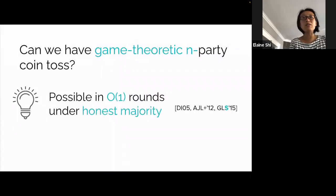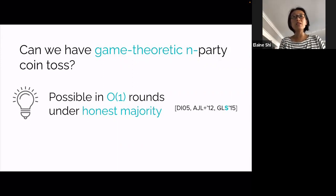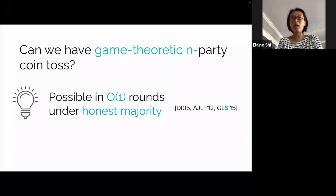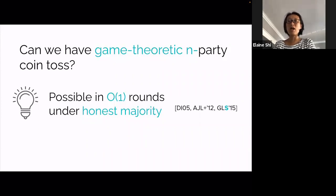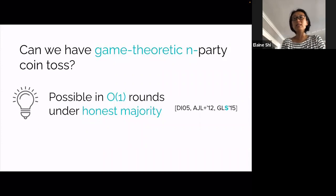Before explaining our results, let me mention that under some strong assumptions we can have trivial solutions—but these are not the settings we are interested in. If we have honest majority, we can just use honest majority MPC with fairness and guaranteed output, accomplishable in constant rounds. However, in decentralized blockchain settings, honest majority is often not a reasonable assumption. If you have a smart contract where people enter using pseudonyms, those pseudonyms are often cheap to create, so it could be that 90% of pseudonyms are controlled by a single entity.